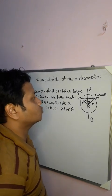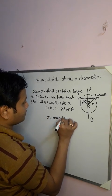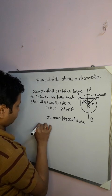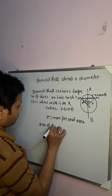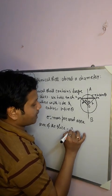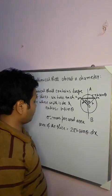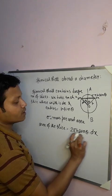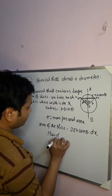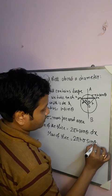Since this is a 2D figure, let σ be the mass per unit area. The area of the slice equals circumference times thickness, which is 2πR sinθ multiplied by dx. So the mass of the slice is 2πRσ sinθ dx.